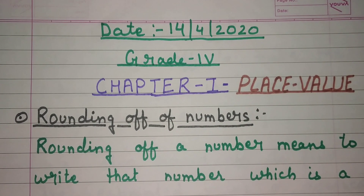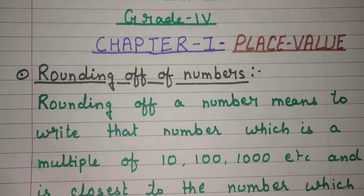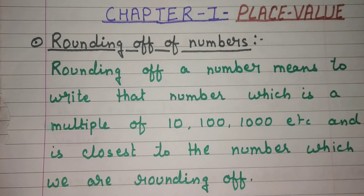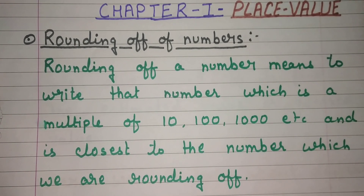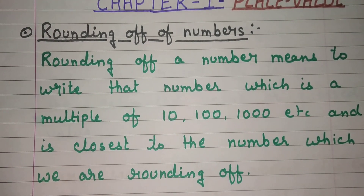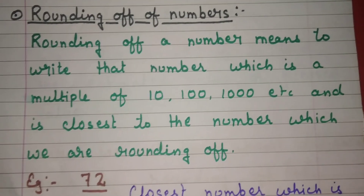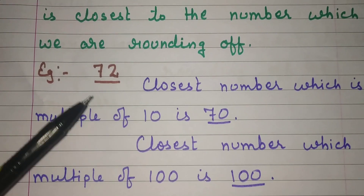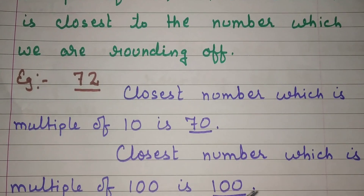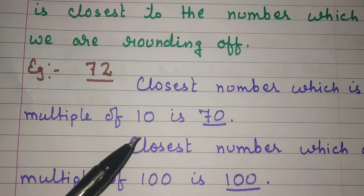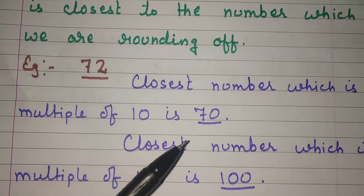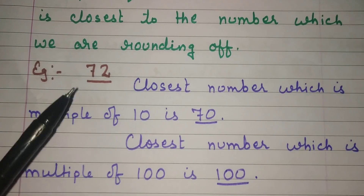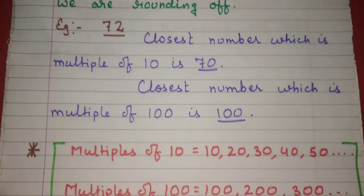Rounding off a number means to write that number which is a multiple of 10, 100, 1000, etc., and which is closest to the number which we are rounding off. Let's take an example: 72. The closest number which is a multiple of 10 is 70, and the closest number which is a multiple of 100 to 72 is 100.